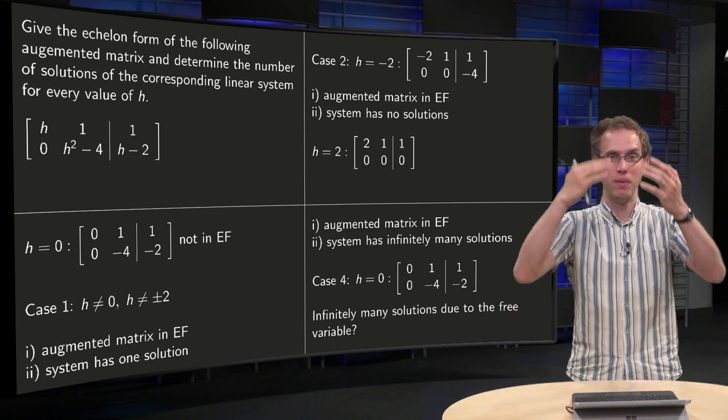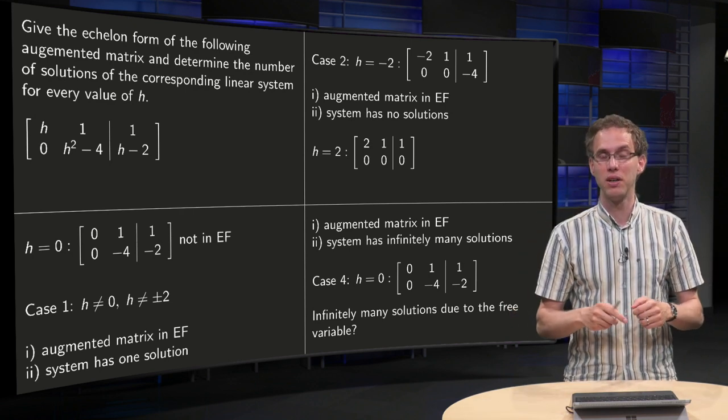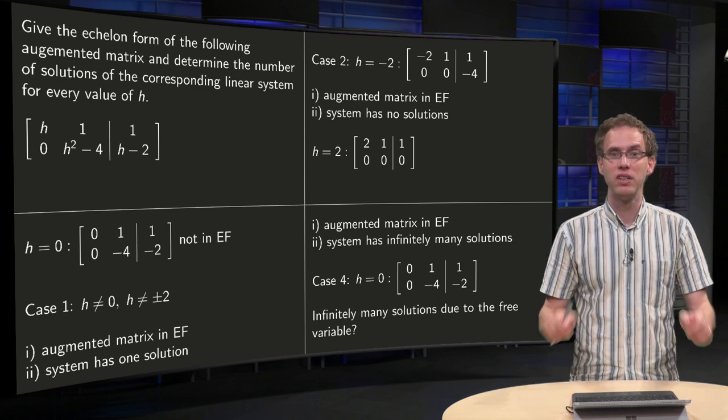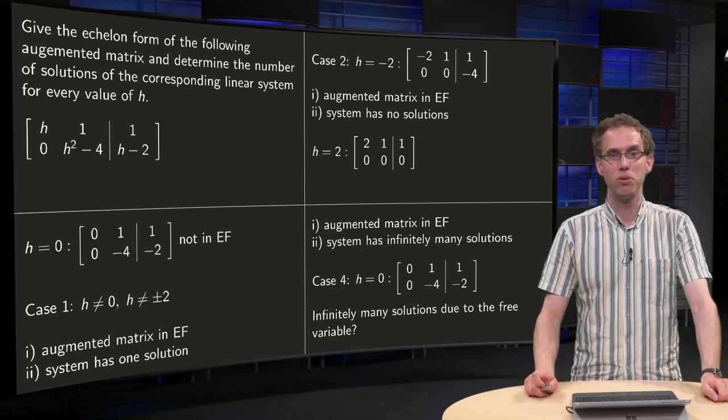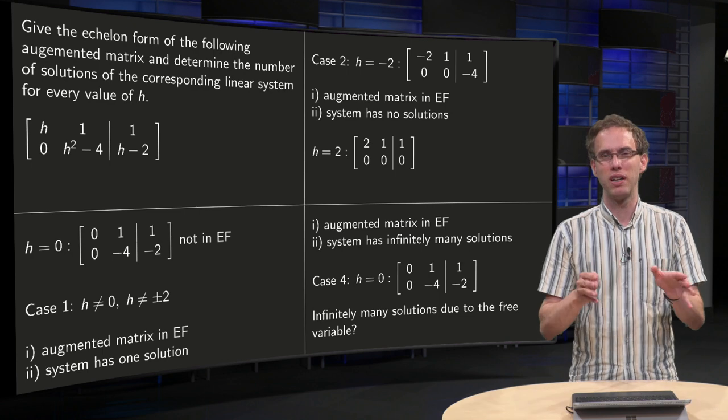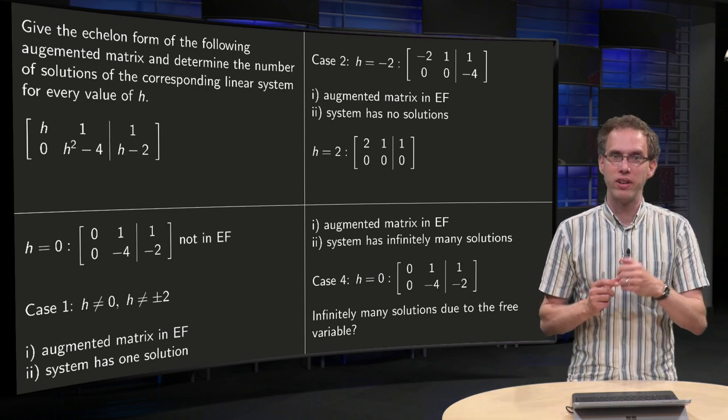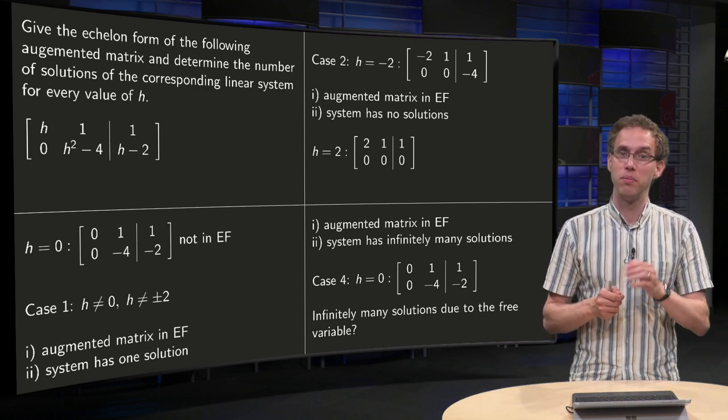That is the reason why you have infinitely many solutions. I can add as many zero rows as I like to any augmented matrix without changing the number of solutions, so don't use an argument like that. You get an infinite number of solutions because you have a free variable.